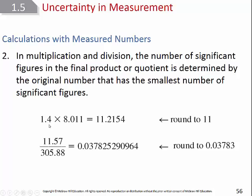For multiplication and division, you round according to the fewest number of significant figures. For example, if one number has 2 significant figures and another has 4, the answer must have only 2 significant figures. In a division problem where one number has 4 sig figs and the other has 5, the answer has 4 sig figs — remember, leading zeros don't count when you're finding where to round.